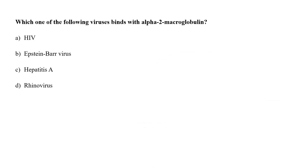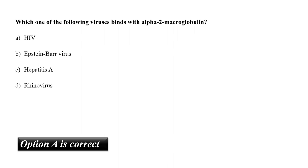Which one of the following viruses binds with alpha-2-macroglobulin? A. HIV, B. Epstein-Barr virus, C. Hepatitis A, or D. Rhinovirus? Alpha-2-macroglobulin is cleaved by human immunodeficiency virus 1 protease at the phenylalanine-684 and tyrosine-685 bond in the bait region, creating the F-form. So the correct answer is option A, HIV.